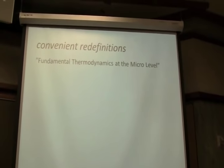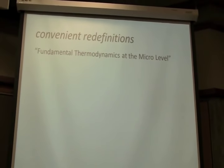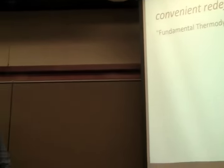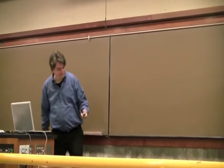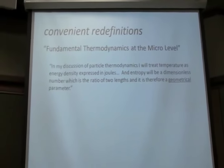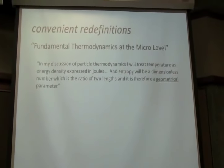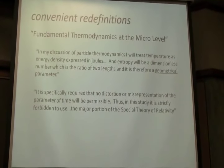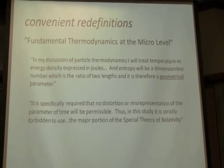So as often you'll see the case in the box, when presented with something that they don't understand, which is all the time, they simply redefine the terms to things they do understand. So for example, in this book, fundamental thermodynamics at the micro level, by the way $50 at the good bookstore nowhere. And about six pages of this is a long poem, by the way. It says, in my discussion of particle thermodynamics, I'll treat temperature as energy density expressed in joules. And entropy will be a dimensionless number, which is the ratio of two lengths, and is therefore a geometrical parameter. It is specifically required that no distortion or misrepresentation of the parameter of time will be permissible. Thus, in this study, it is strictly forbidden to use the major portion of the special theory of relativity. Relativity gets a lot of hate from these various folks.